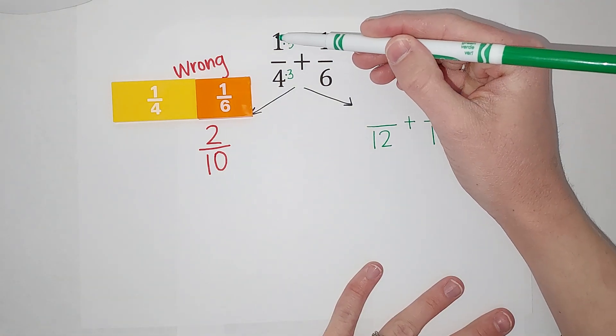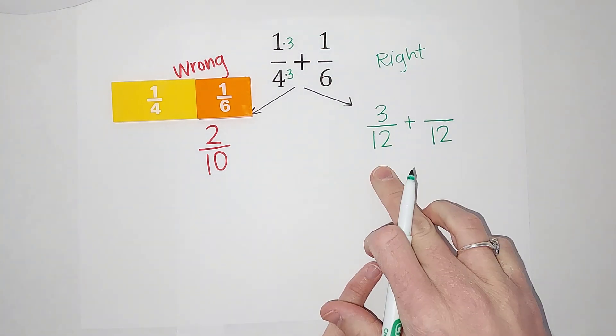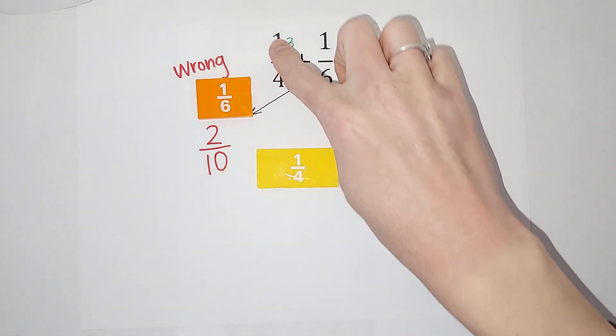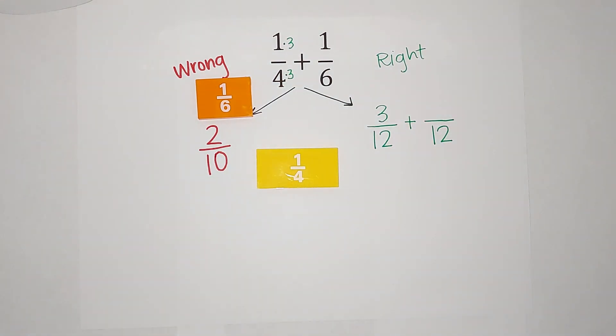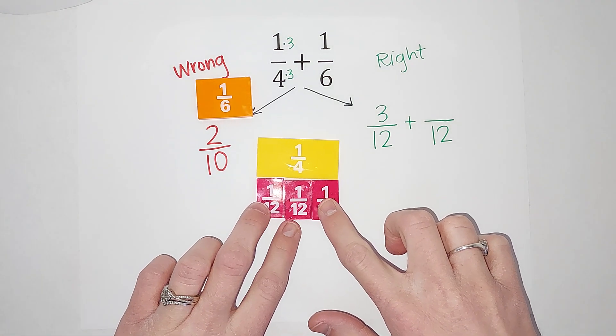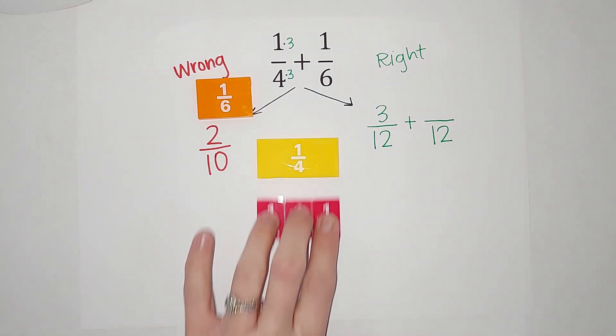So when I multiply these, I get one times three gives me three, and four times three gives me that 12. And let me show you. So I am saying that 1/4 is equal to 3/12, right? So let's see. There's my 1/4. Here is my 3/12. Oh, look at that. It just lines up beautifully, right? So feeling pretty good about that.